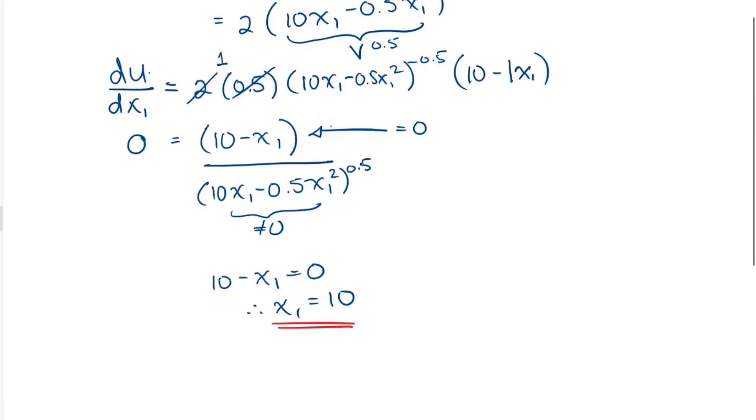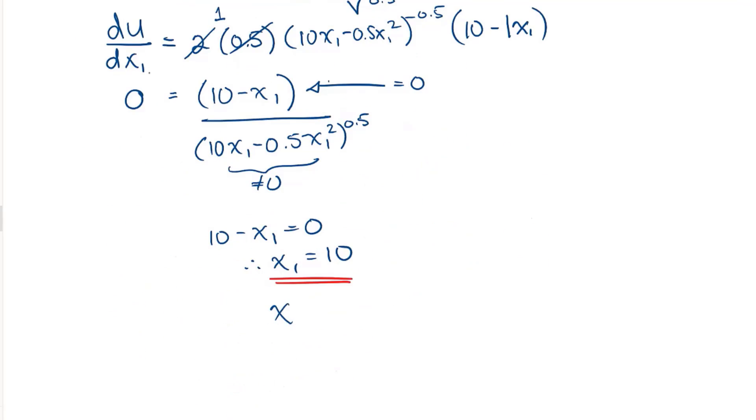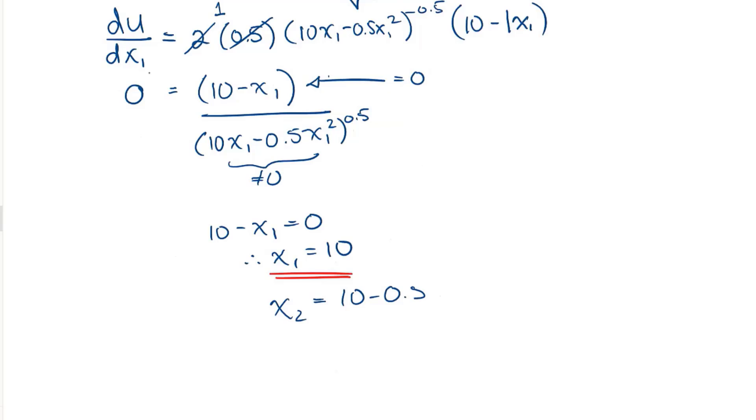Now I'm going to solve for my X2 value. X2 would be equal to 10 minus 0.5 times X1. X2 is going to be equal to 10 minus 0.5 times 10. So that's going to be 10 minus 5. X2 will be equal to 5.